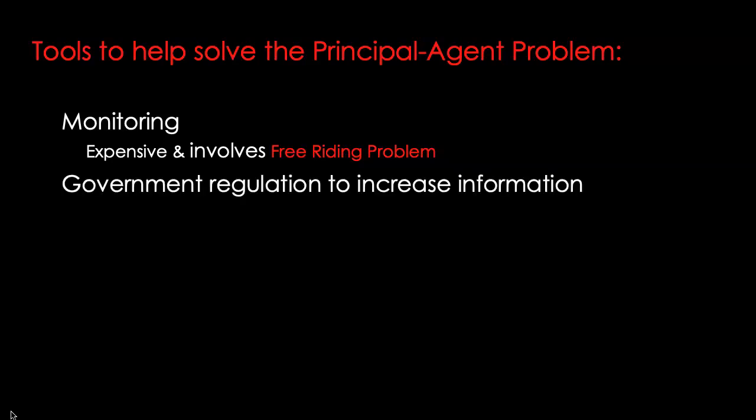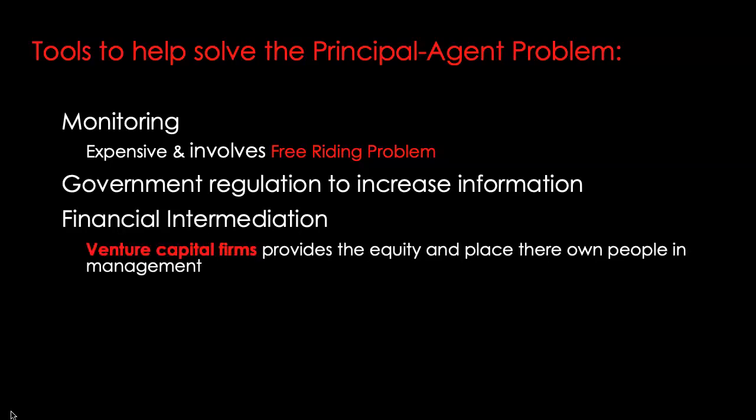This leads us to the role of government in equity markets — providing information and increasing transparency through regulation. Governments can implement laws requiring standard accounting principles and impose criminal penalties for fraudulent activities. Regarding financial institutions: small, unknown but high-growth companies do not have direct access to financial markets, and investors don't trust them enough to buy their newly issued stocks and bonds. Venture capital firms will come in, provide equity, and place their own people in management, thereby reducing the moral hazard problem while providing much-needed financial capital.